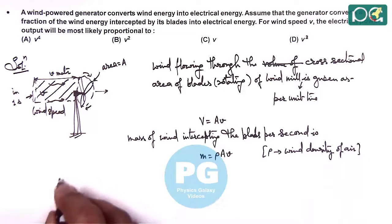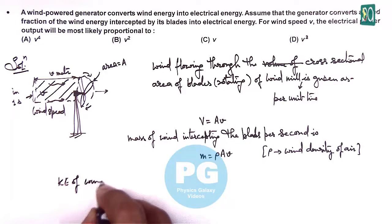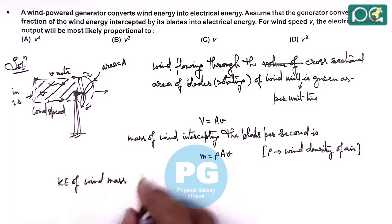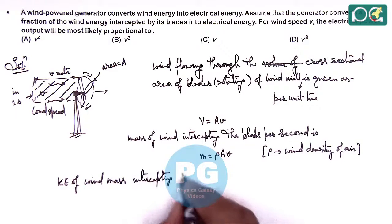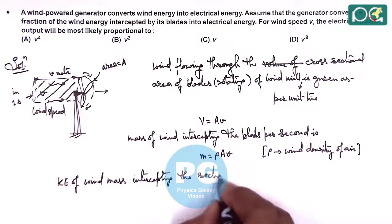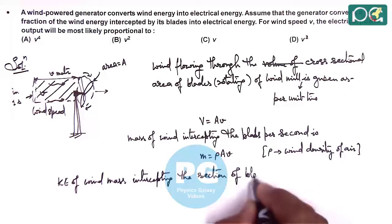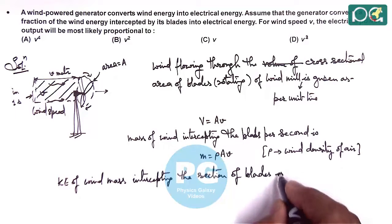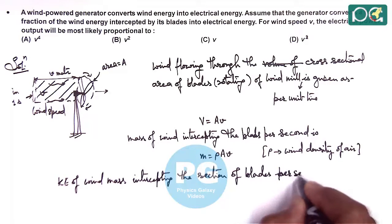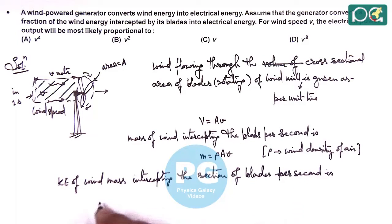And if we talk about the kinetic energy of wind mass, the kinetic energy per second is given as half MV squared. When we substitute the value of mass it is half ρAV cubed. And this kinetic energy per second intercepting...